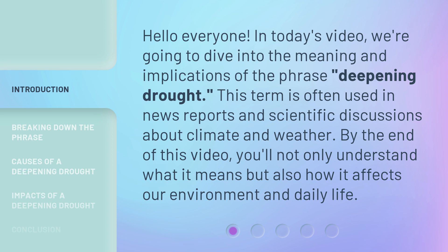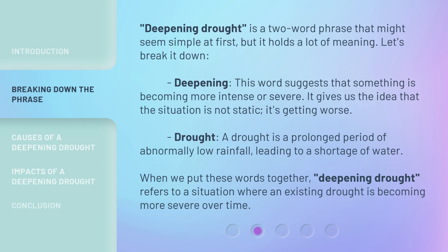By the end of this video you'll not only understand what it means but also how it affects our environment and daily life. Deepening drought is a two-word phrase that might seem simple at first but it holds a lot of meaning. Let's break it down. 'Deepening' — this word suggests that something is becoming more intense or severe.